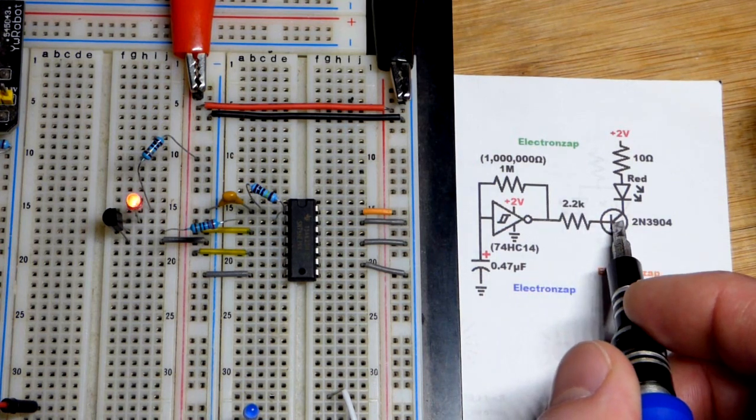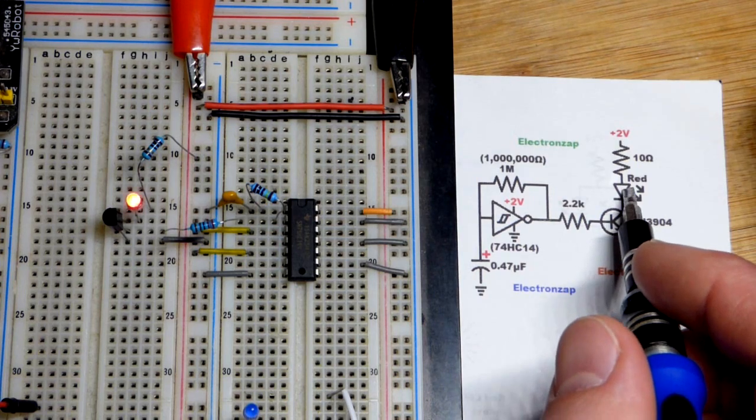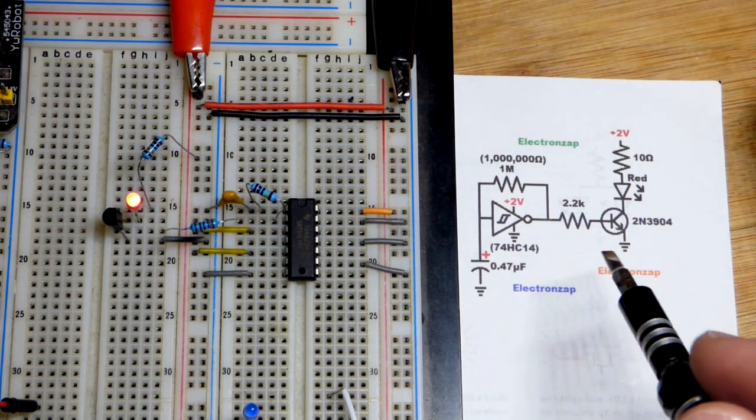Now we added a transistor. So when the output is high, that turns the transistor on and the LED turns on. So ultimately we are getting the same effect right there.